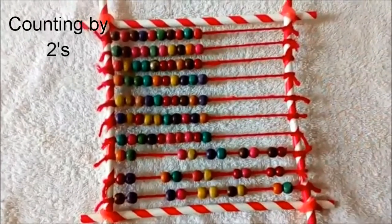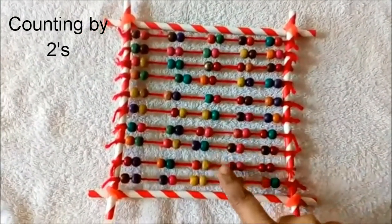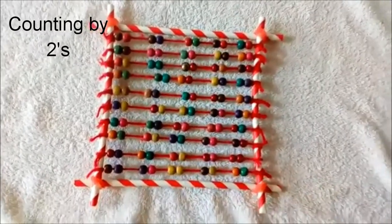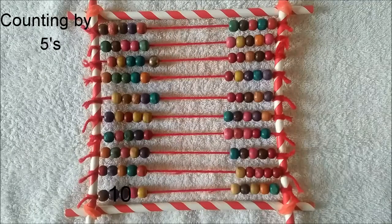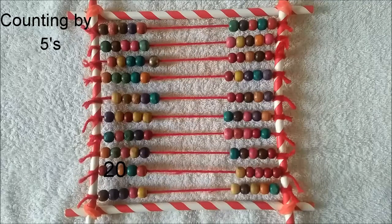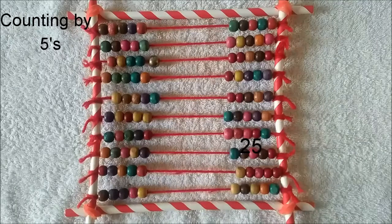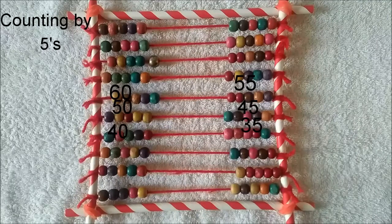Till 100. So the child counts 5's: 5, 10, 15, 20 like that. They separate the beads and then count the 5's: 5, 10, 15, 20 like that.